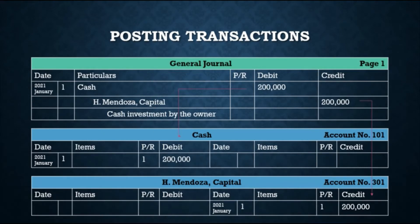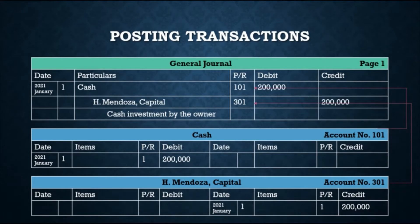Next, record the debit and credit amounts in their respective accounts as they appear in the journal — 200,000 on the debit side of the Cash ledger and 200,000 on the credit side of the H. Mendoza, Capital ledger. Finally, enter the account numbers in the posting reference column of the journal: account number 101 next to the Cash debit entry, and 301 next to the H. Mendoza, Capital credit entry.